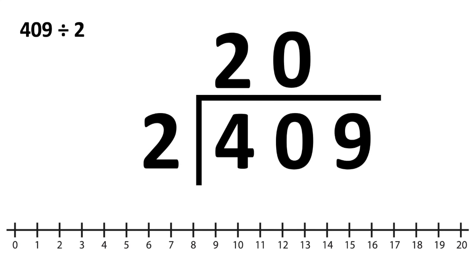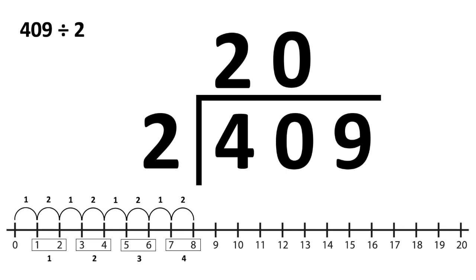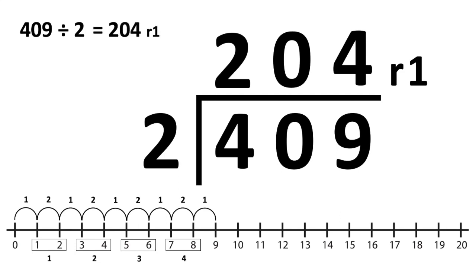Finally, how many 2s go into 9? Counting up: one group, two groups, three groups, four groups — with 1 remainder. So 409 divided by 2 equals 204 remainder 1.